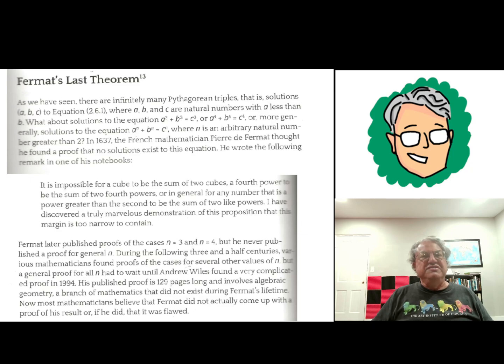He never actually did write down a proof. He proved it for a few special cases. I think he proved it when n equals three and n equals four. It's actually not that hard to prove when n equals four. I've done this proof. n equals three is trickier. But I think the consensus now is that just about every mathematician in the world believes that he never actually did come up with a proof. Maybe he thought he did. He probably thought he had a proof for all n, but I'm sure that it had a flaw in it.